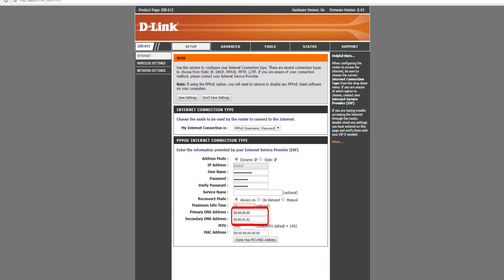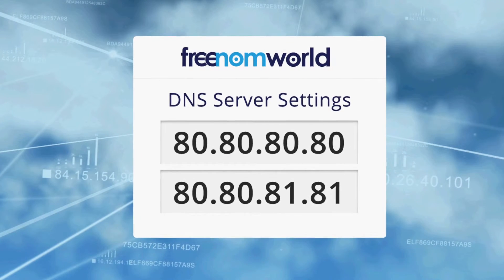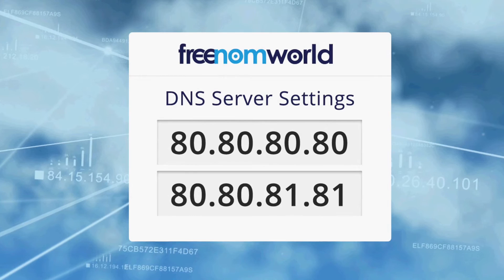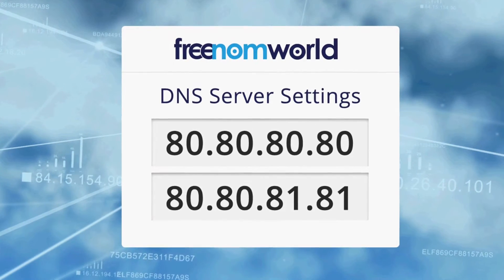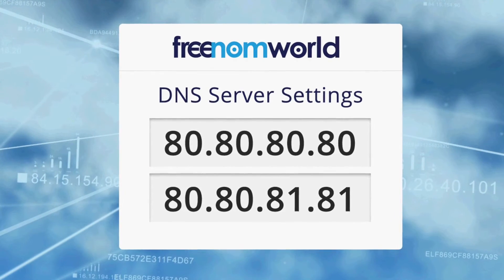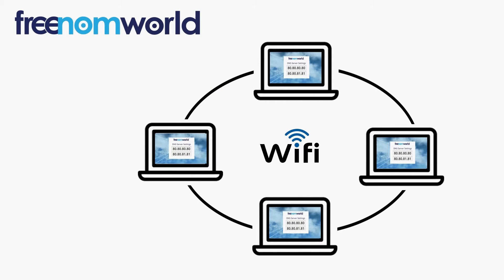The Freedom World DNS IP addresses are 80.80.80.80 and 80.80.81.81. It is important to ensure that all users of your local area network are automatically given the Freedom World DNS IP addresses each time they connect to your network.